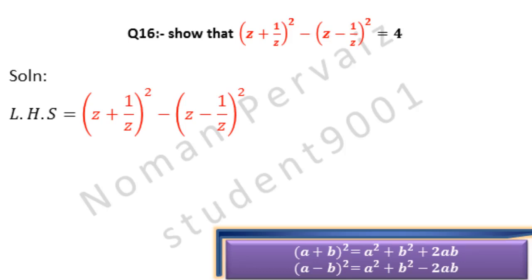We will see the formulas to solve this question. The first formula we are going to apply is: (a + b)² = a² + b² + 2ab. The second formula is: (a - b)² = a² + b² - 2ab.